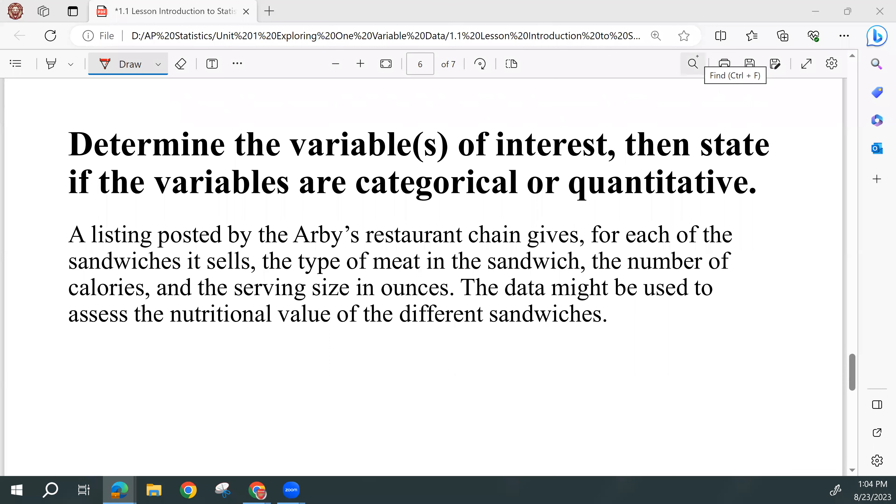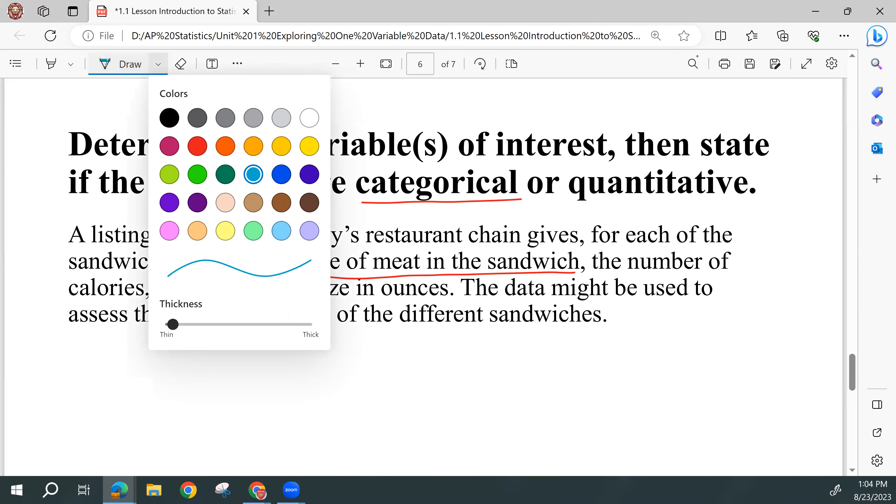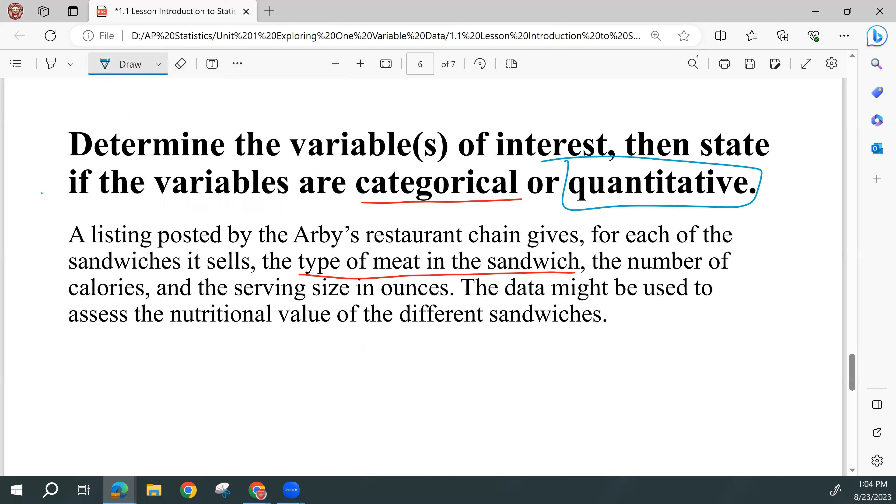So I'm going to go ahead and use my red again for my categorical variables. And so we're here talking about the sandwiches sold at Arby's. And the type of meat in the sandwich is going to be categorical. We can put those into categories: ham, turkey, roast beef. I don't know what else they sell. That looks like the only categorical variable. It looks like the other ones are quantitative, if I didn't miss any. The number of calories, that's something we measure in calories. Serving size in ounces, it gives us a unit right there in ounces. And so those two are quantitative.